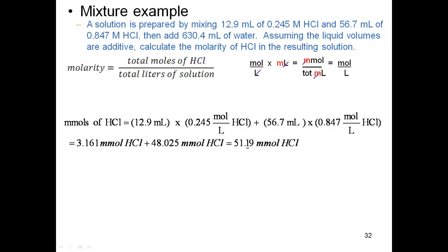Going by sig figs, it's a multiplication so the least number is 3 sig figs, which all of them have 3 sig figs. That means my sig figs on the 3.161 is on the 6 here, the hundreds place. On the 48.025, once again, it's going to be on the tens place on this one.